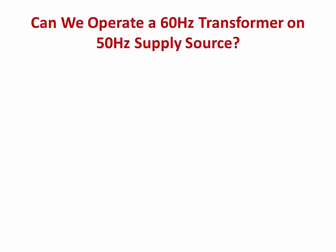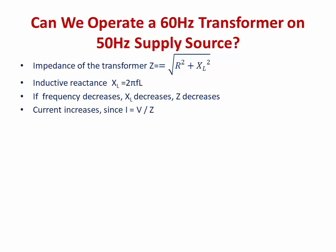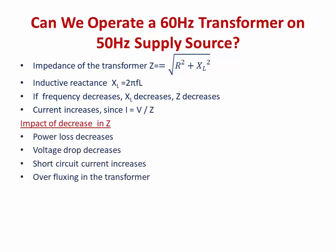Another question: can we operate a 60 Hz transformer on a 50 Hz supply? Using the same formula — Z depends on R and XL, and XL = 2πfL — if the frequency decreases, inductive reactance decreases, which decreases impedance, thereby causing an increment in current. Will this increment in current or decrease in impedance have an impact on the transformer? Let us discuss that.